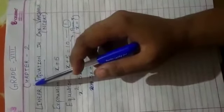Hello everyone. Today we're doing chapter 2, that is linear equation in one variable. This is from your textbook. You can see this chapter is given as chapter 2.